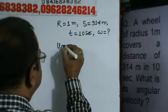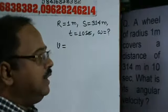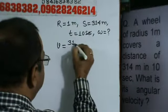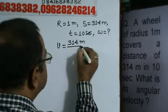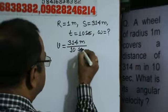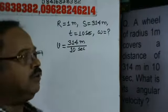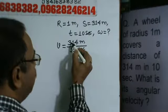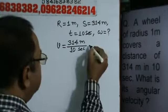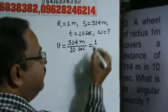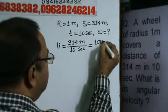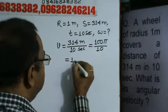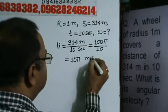Now, what is velocity? Velocity of the body is nothing but distance covered in unit time. So what is distance covered? 314 meters. And what is the time? 10 seconds. So this is the linear velocity of the body. This can be written as 314, and since 3.14 is the value of pi, this can be written as 100 pi divided by 10, which equals 10 pi meters per second.